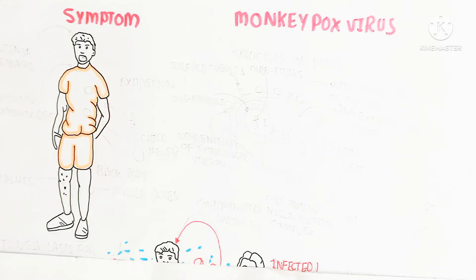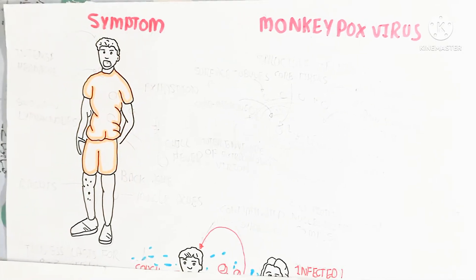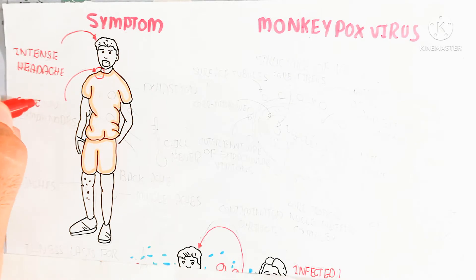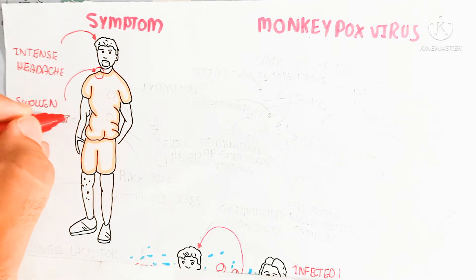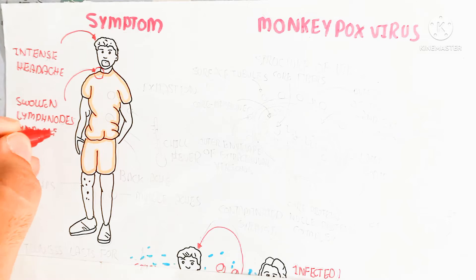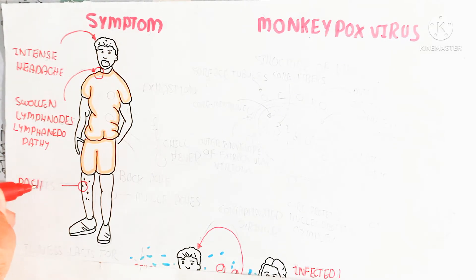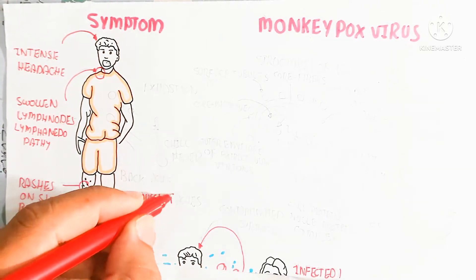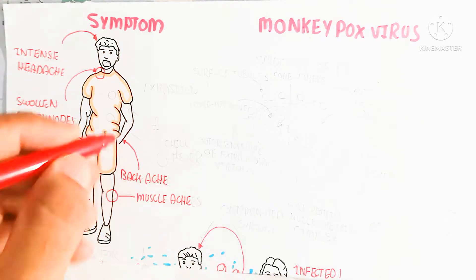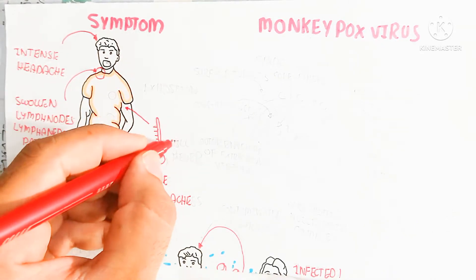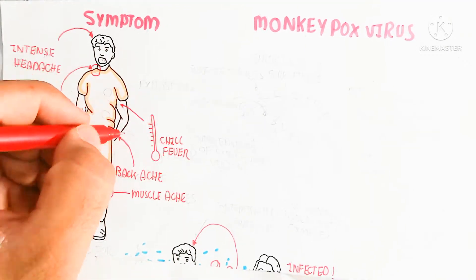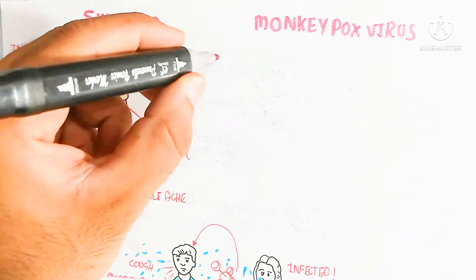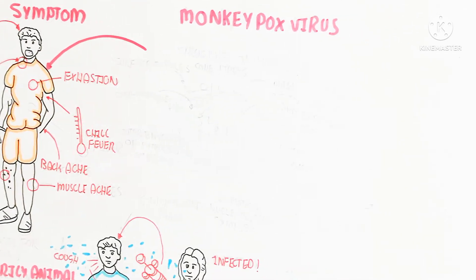The symptoms of monkeypox virus include intense headache, swollen lymph nodes (lymphadenopathy), rashes and blister formation on the skin, backache, and muscle aches. The patient can also experience chills, non-shivering thermogenesis, and fever, which increases due to inflammation.